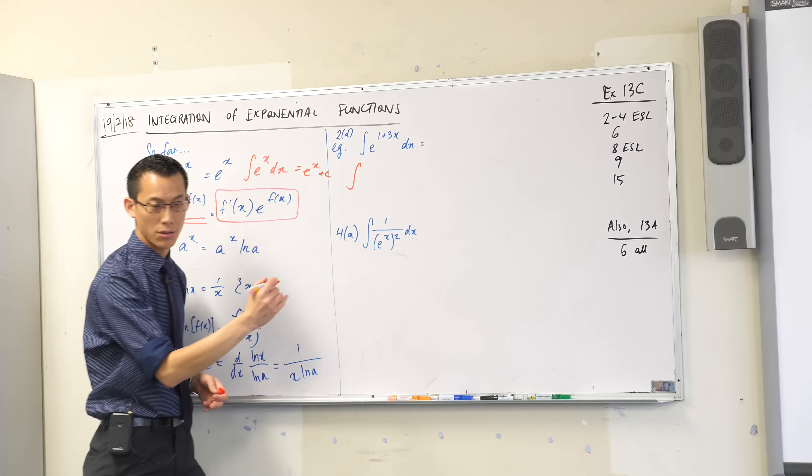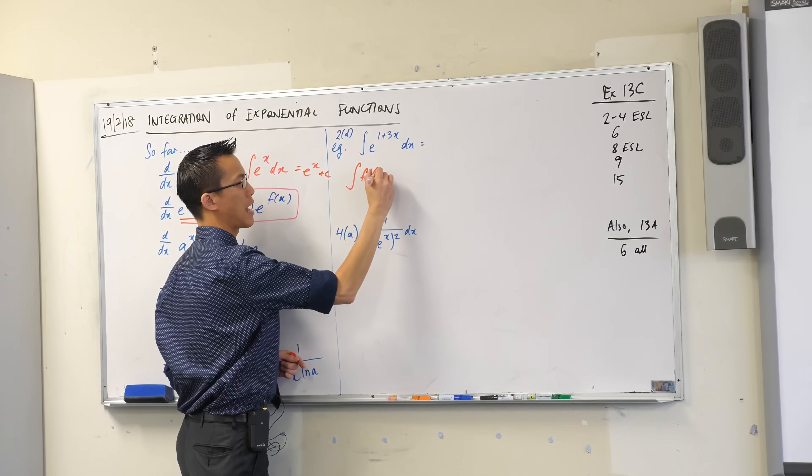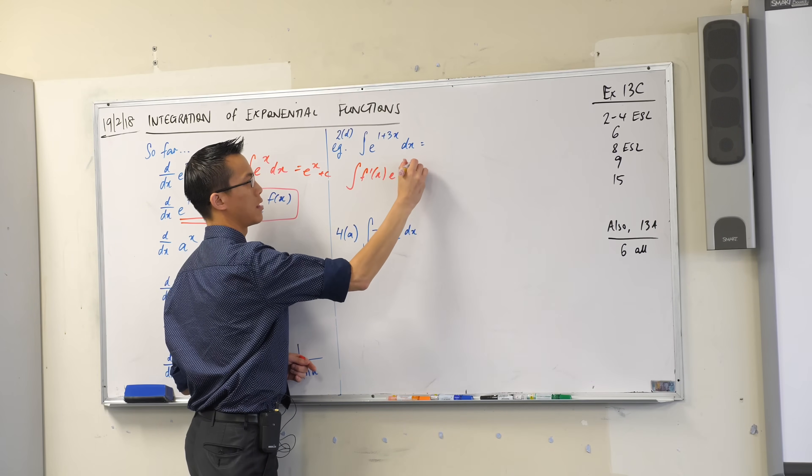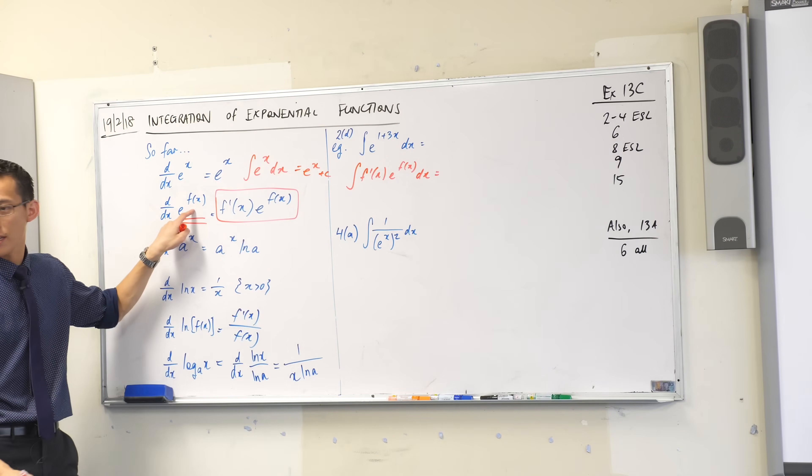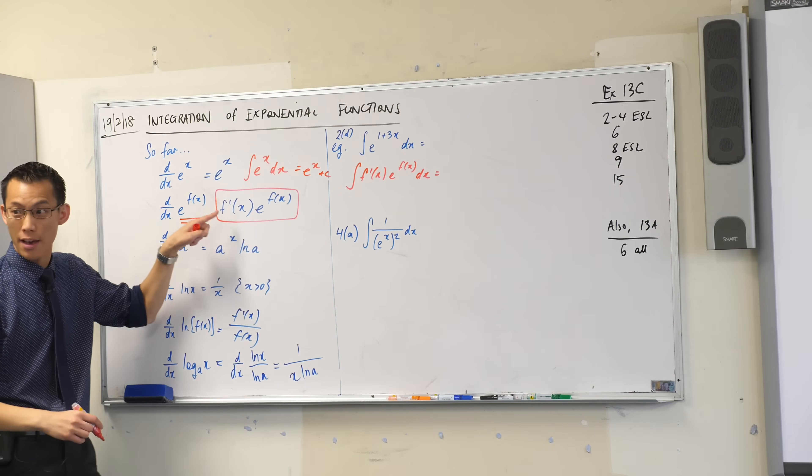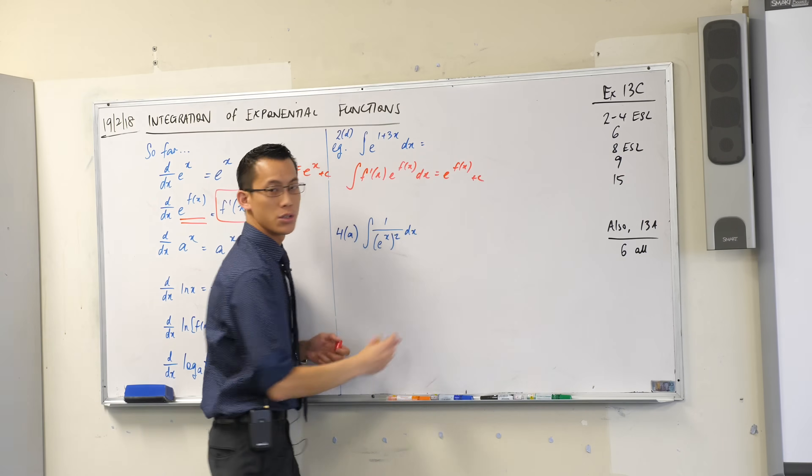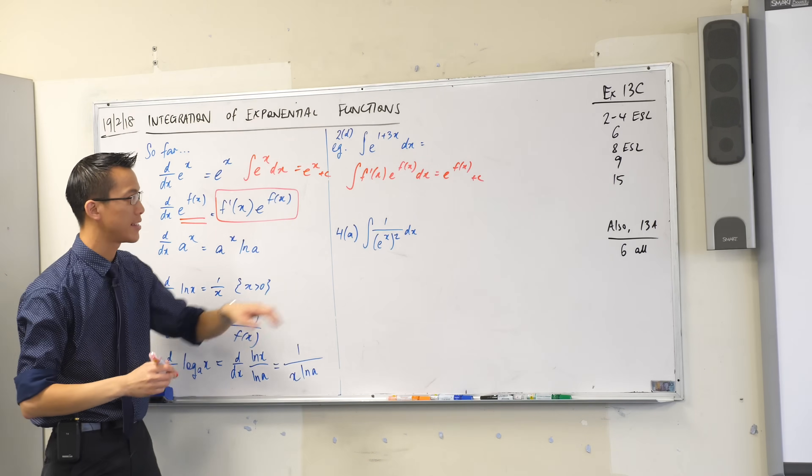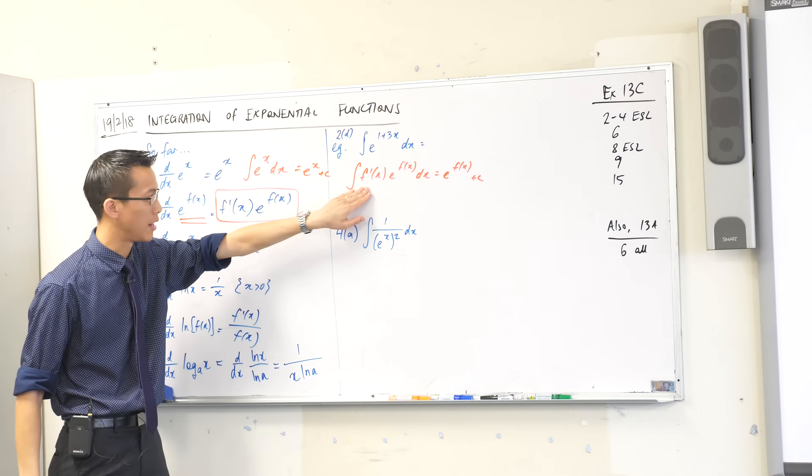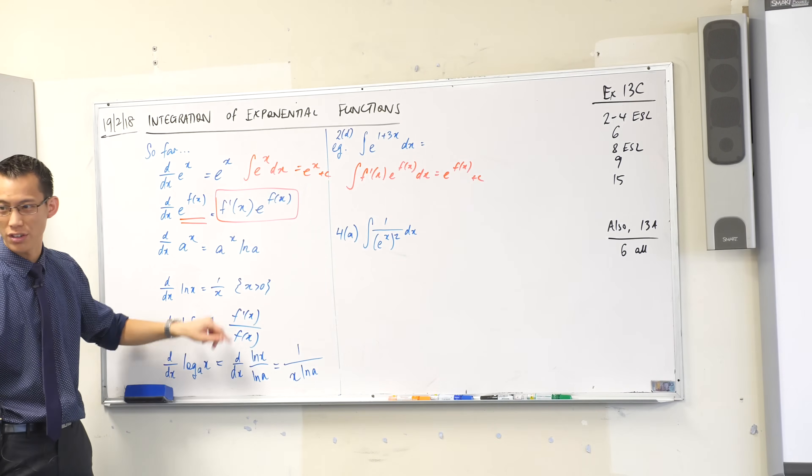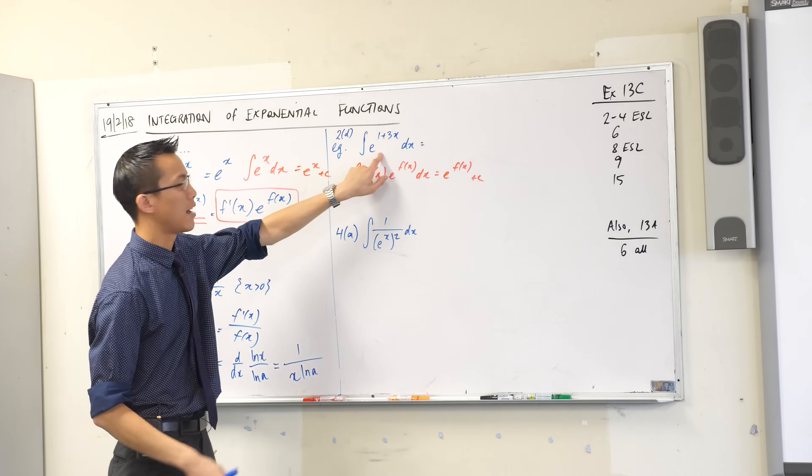So if you wanted to summarize that in a rule, you'd say the integral of f dash e to the f, f dash e to the f should send you back to this guy, just e to the f. Does that make sense? So that's what I would like. If I can see e to the f and then f dash there at the same time, it's just like looking for f dash on f, just it looks slightly rearranged.